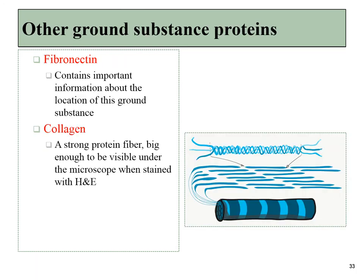Other things found outside of cells can be seen under the microscope because they're large and dark enough. These include fibers such as fibronectin, which can carry important information about where a cell is located based on what the extracellular matrix is telling it. Another very important fiber — definitely visible under the microscope — is collagen, a very strong protein made by cells that is wound around other versions of itself until it forms a very large protein found outside of cells. This protein binds to eosin in our typical pink and purple stain.